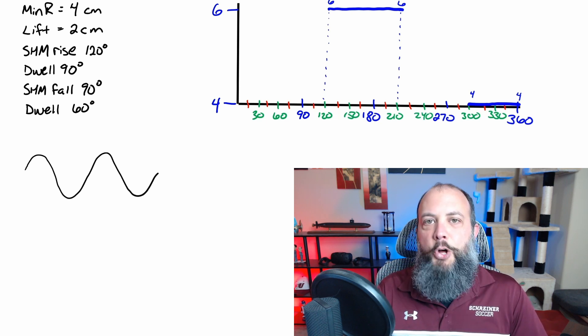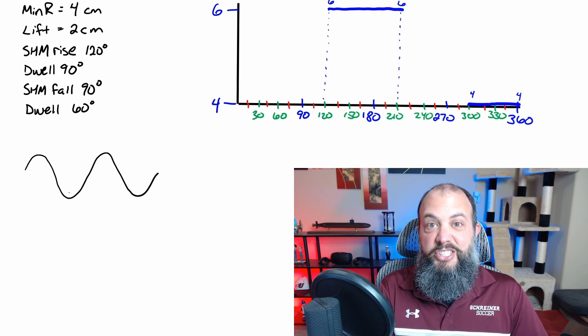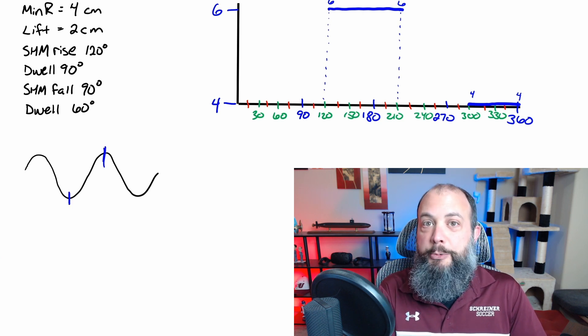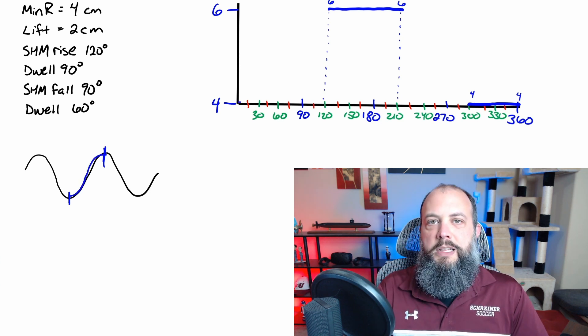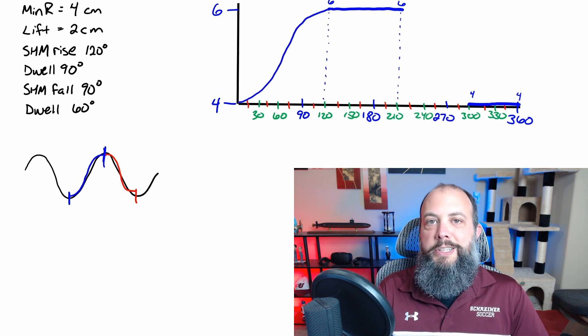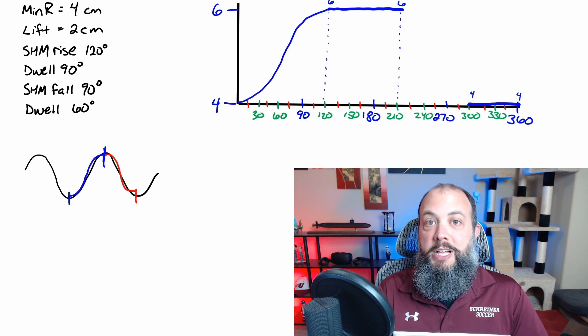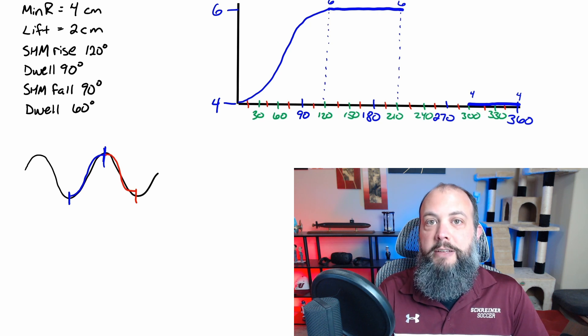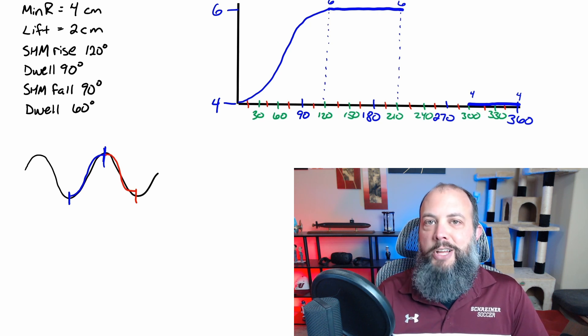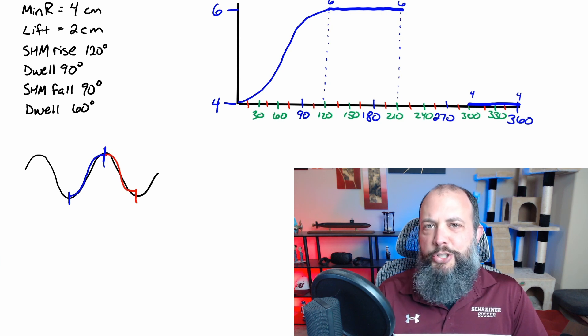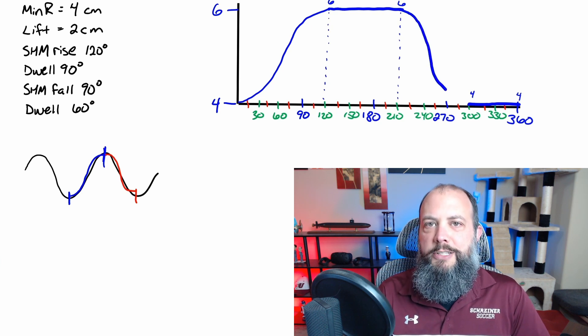And so this simple harmonic motion rise is going to look like this S-shaped curve increasing from the bottom of the valley to the top of the peak. And the simple harmonic motion fall should look like the red portion of this sine wave from the top of the peak to the bottom of the valley. But since it's covered in only 90 degrees, it's going to be squished together a little bit more than the last one was.